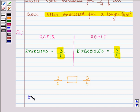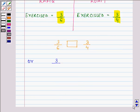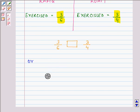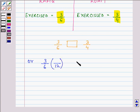That will be done by—we know that LCM of 6 and 4 is 12. So to make the denominator over here 12 and similarly over here also...